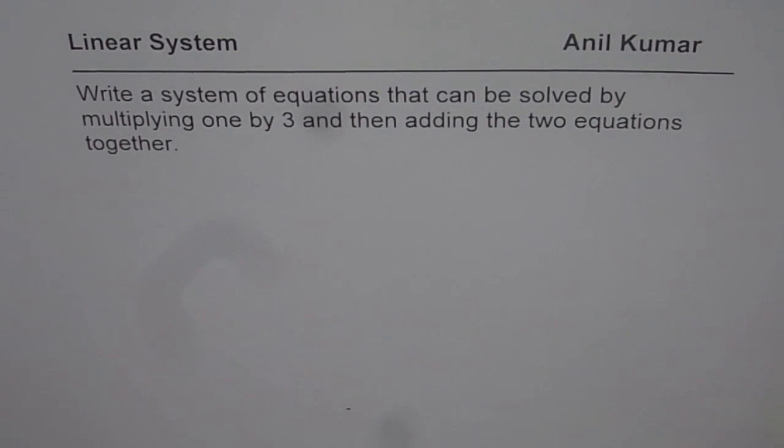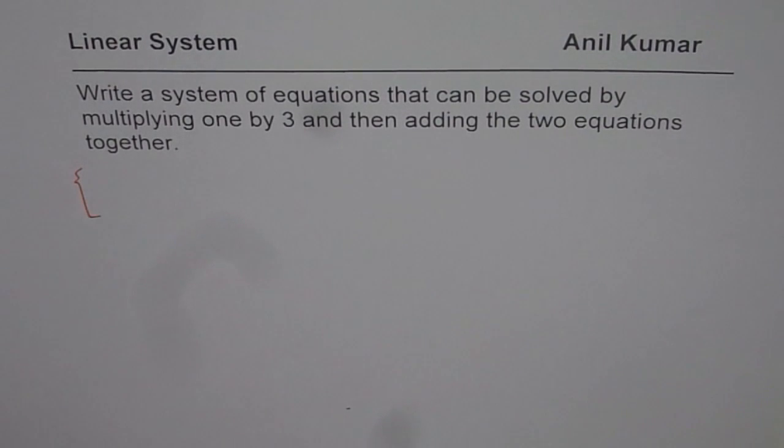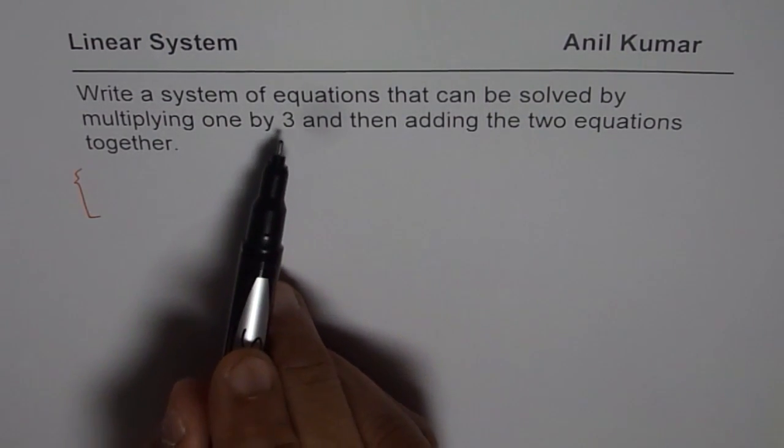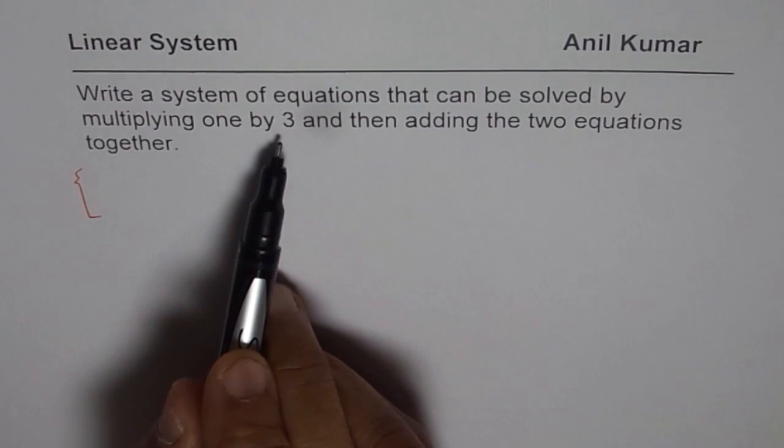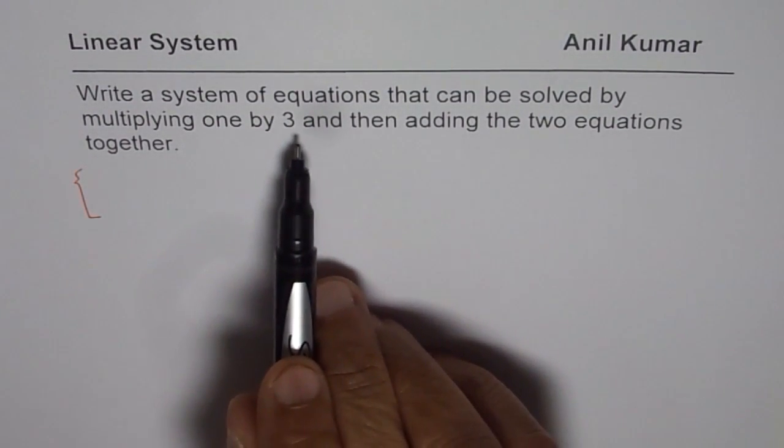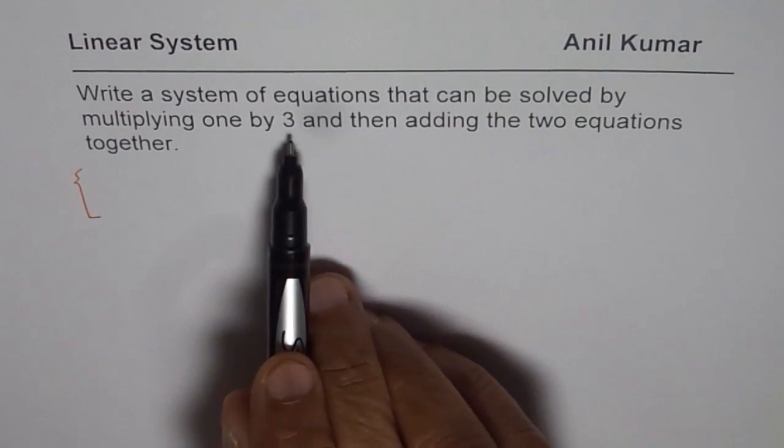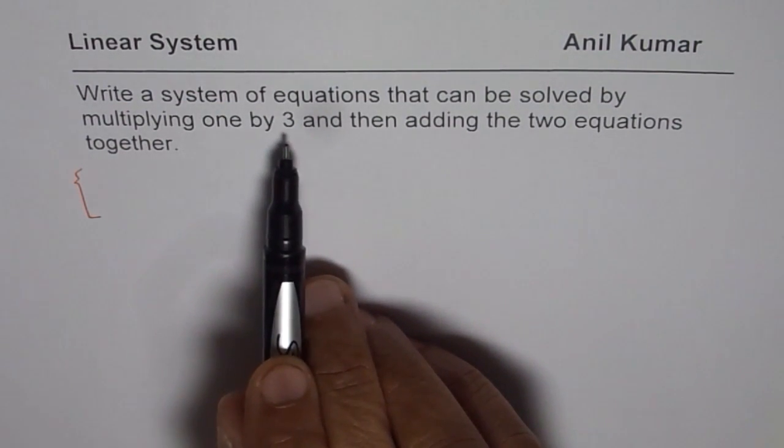In this case, you have to think about a linear system where the coefficients initially given are not the same. But if you multiply one equation by 3, then the coefficients become the same and when you add, those variables get cancelled off. That is what we are trying to figure out.